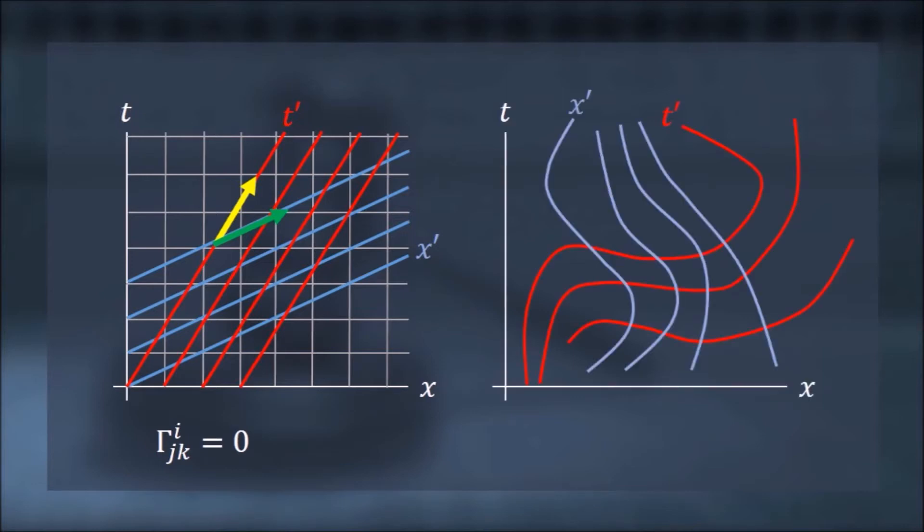For example, in flat spacetime the type of coordinates we're used to look something like this. The different color coordinate lines may not be parallel, but the directions of the bases are forever fixed, and therefore the Christoffel symbols are zero everywhere. But, if we wanted to, could we not choose some crazy coordinates like these? Of course we could.